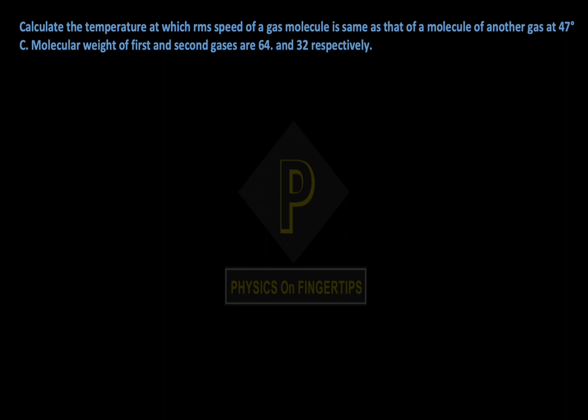64 and 32 respectively. So, what is given? We have two gases with molecular weights 64 and 32. Also given is the second gas temperature of 47°C. We need to find the first gas